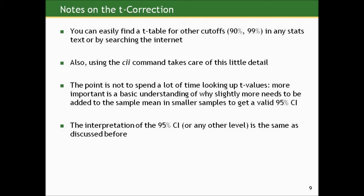Using the CII command in Stata takes care of this detail anyway — it's going to do all the looking up and computing for us. So really, forget about T tables from here on in. I don't want you to ever look up anything in a T table unless you don't have Stata at your disposal, and I will never make you use one on an exam. The point is not to spend a lot of time looking up T values — the computer can do that for us. More important is the basic understanding of why slightly more needs to be added to the sample mean in smaller samples to get a valid 95% confidence interval, and an appreciation that we still have this machinery in place so we don't have to repeat a study multiple times. The interpretation of the 95% confidence interval is the same as before.